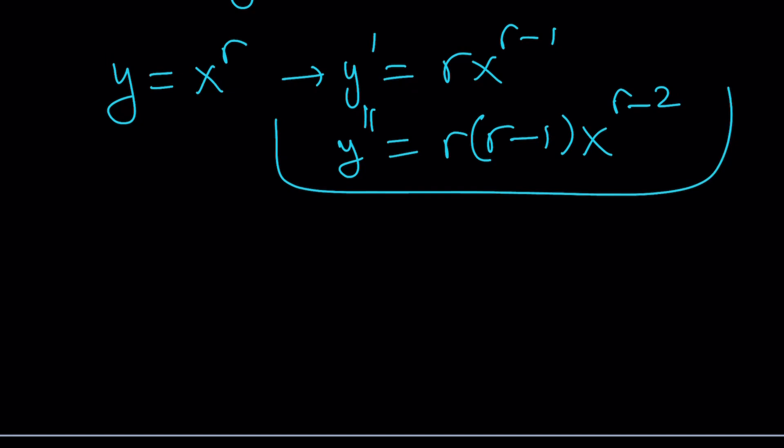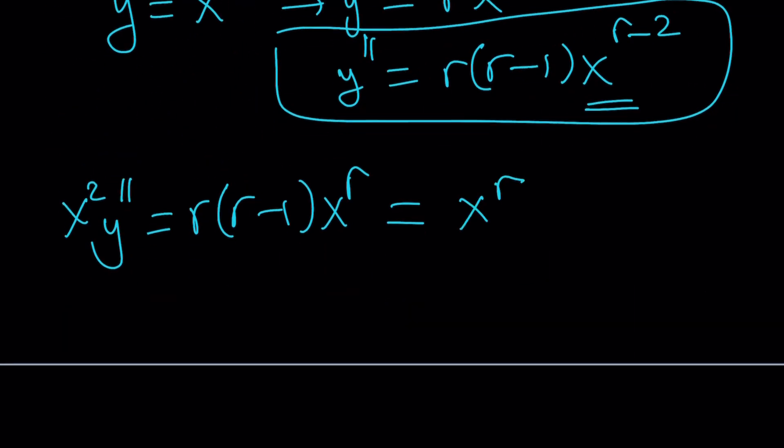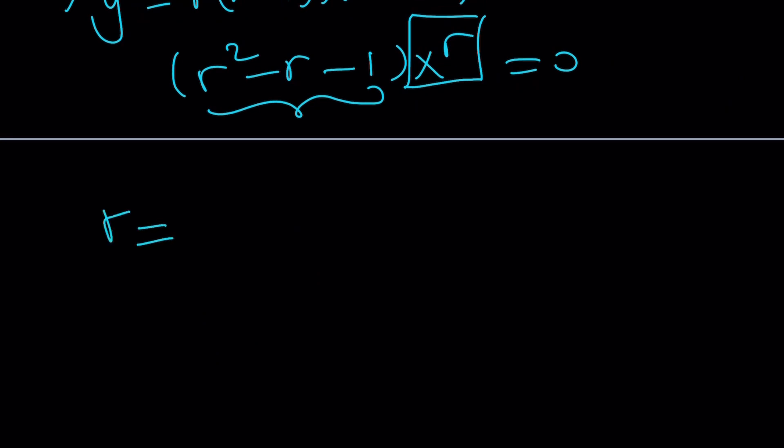Great, so now let's go ahead and multiply this by x squared. That's going to give us, obviously here, x to the power r, r, r minus 1, x to the power r, and that's equal to y, which is x to the power r. Put those together, you get r squared minus r minus 1 times x to the r equals 0. Obviously, x to the power r represents any term. It's not going to be 0. This has to be 0. And from here, we get two solutions. Using the quadratic formula, we get 1 plus minus the square root of 5 over 2. Yay, golden ratio. Awesome.